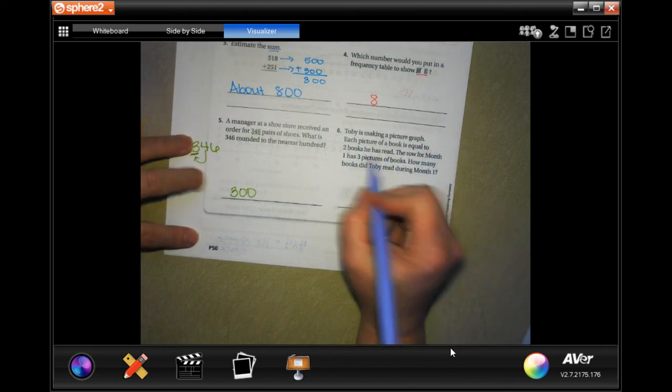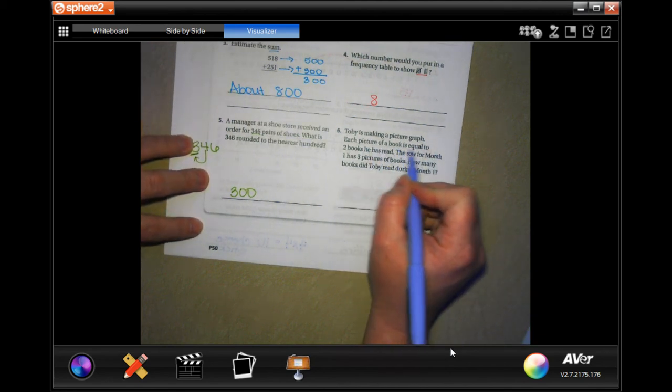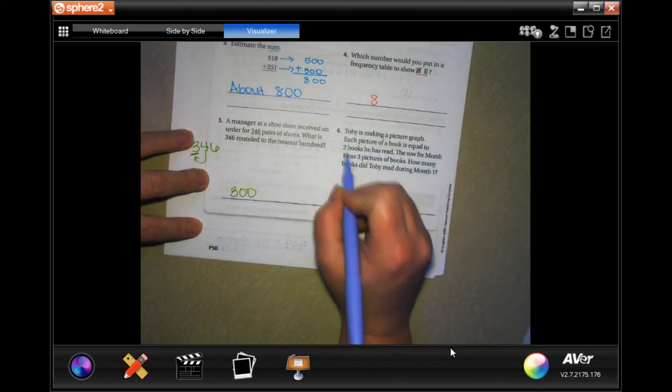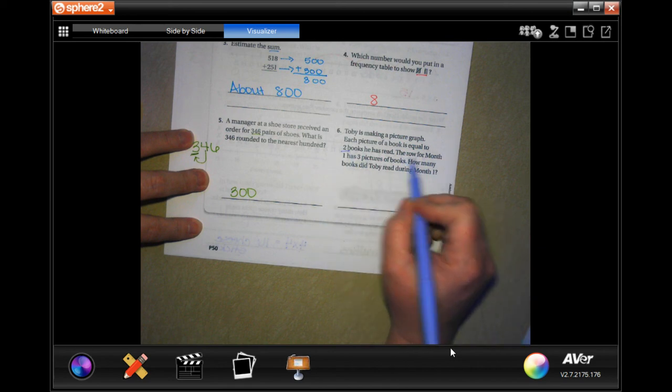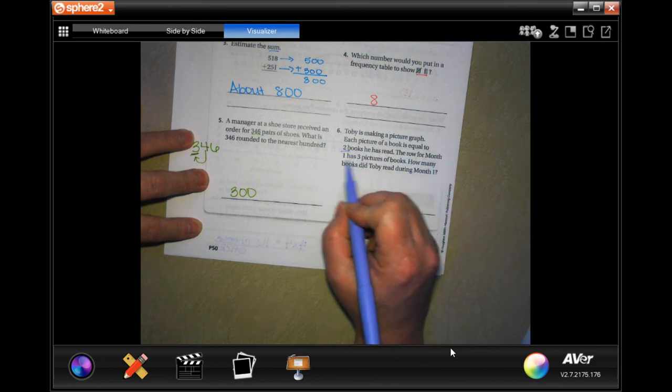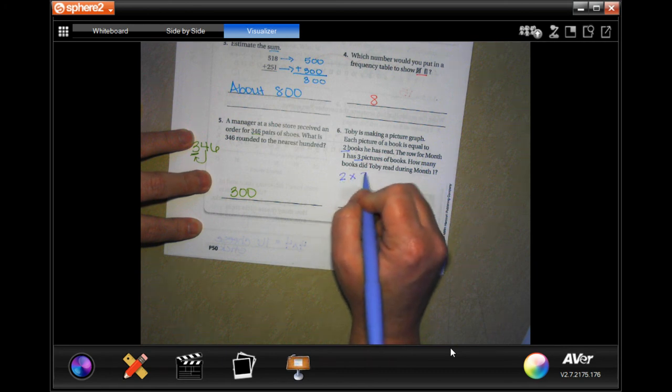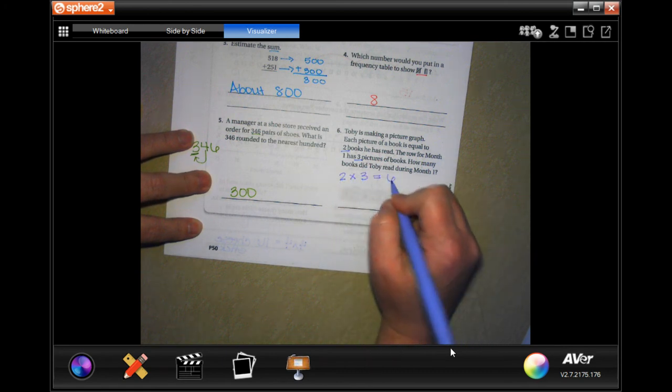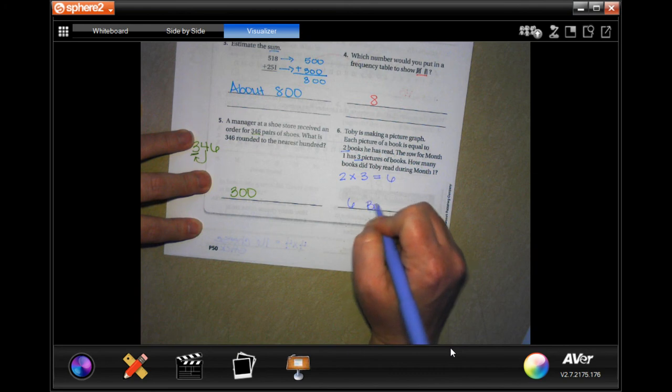Toby is making a picture graph. Each picture of a book is equal to two books. The row for month one has three pictures. So two times three, that would be six. So six books.